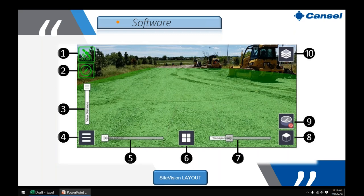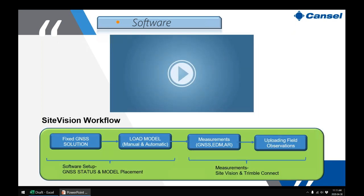The SiteVision layout has many buttons around the periphery, but the main objective is to see your model placed in augmented reality — for example, a simple surface overlaid on top of existing ground. The workflow breaks down into four steps: first, get good position for the device; next, load the model; then use the model and measure relative to it; finally, upload that information for QC/QA review.